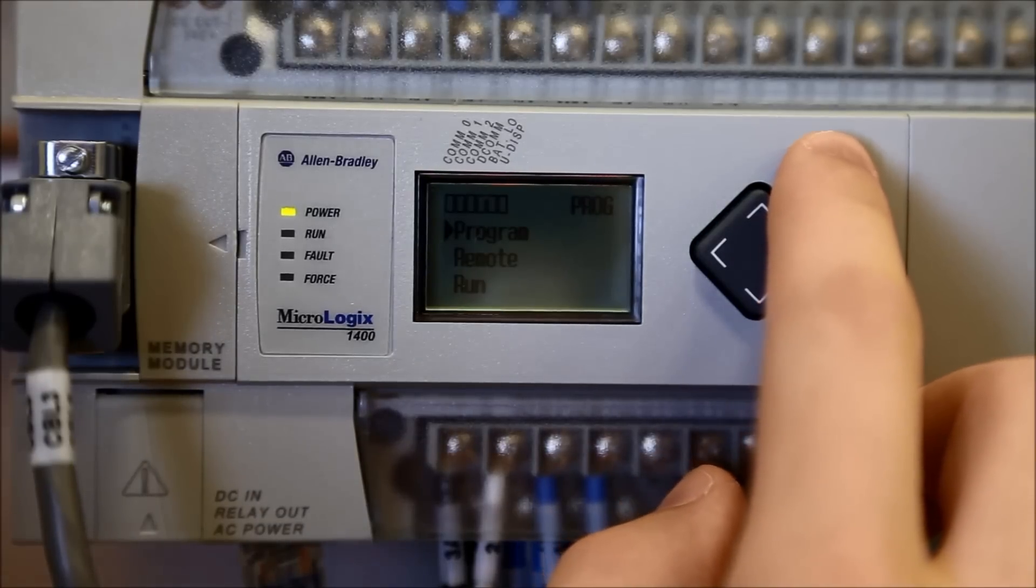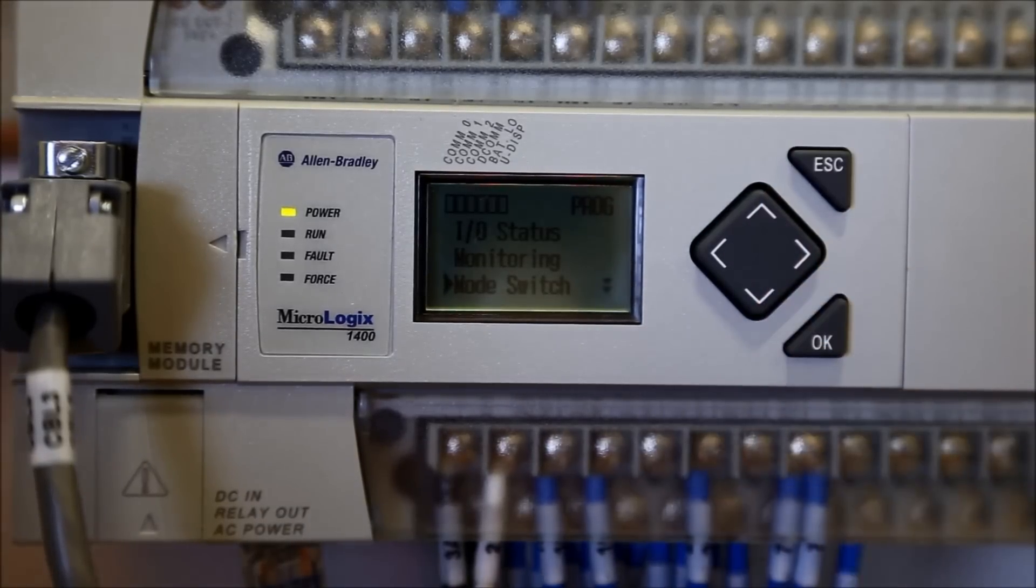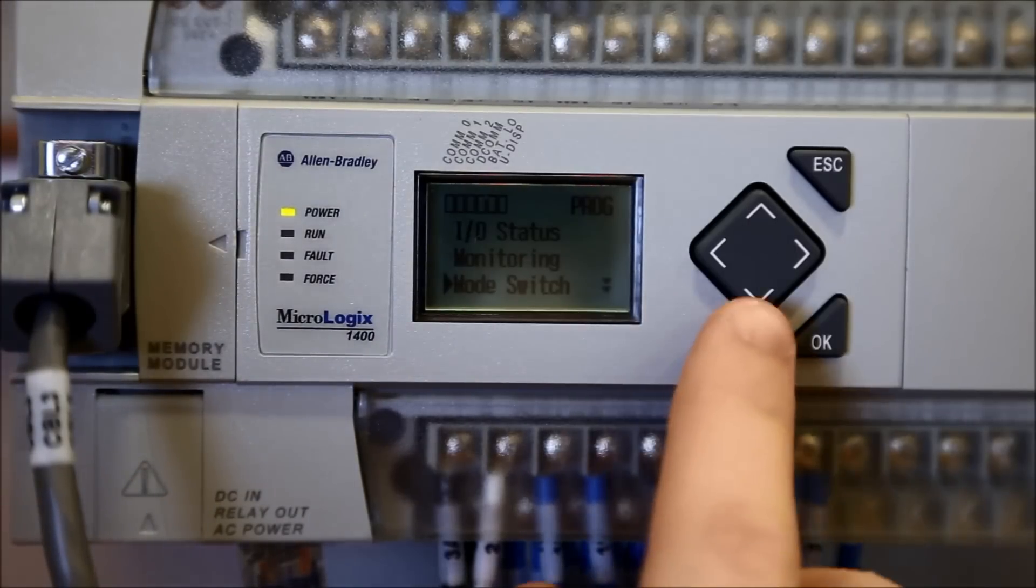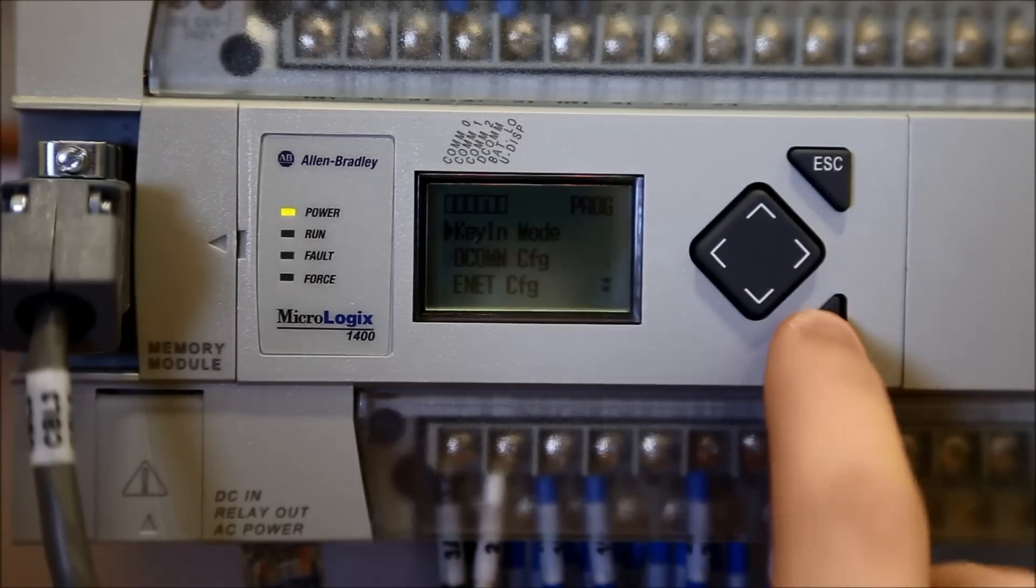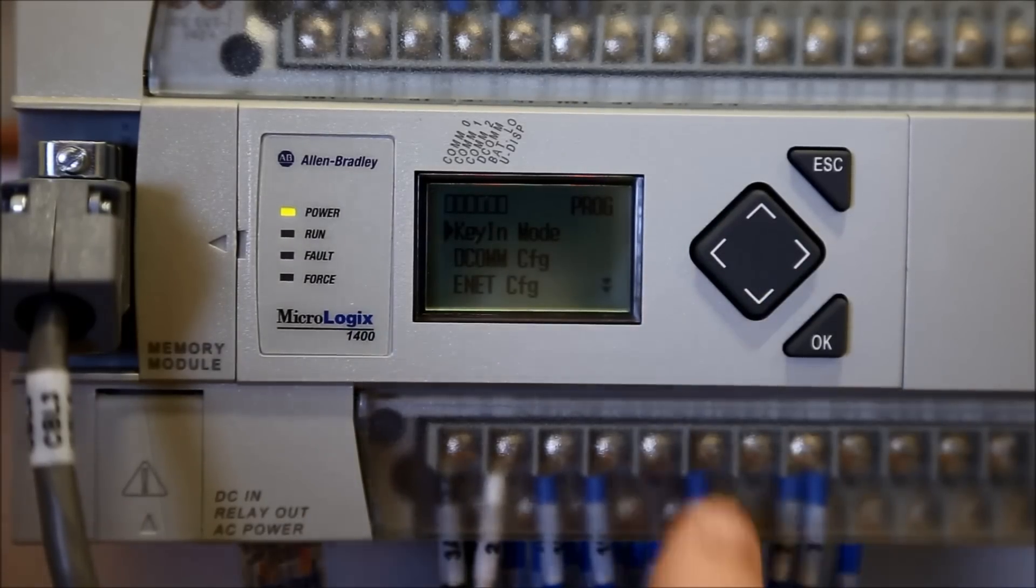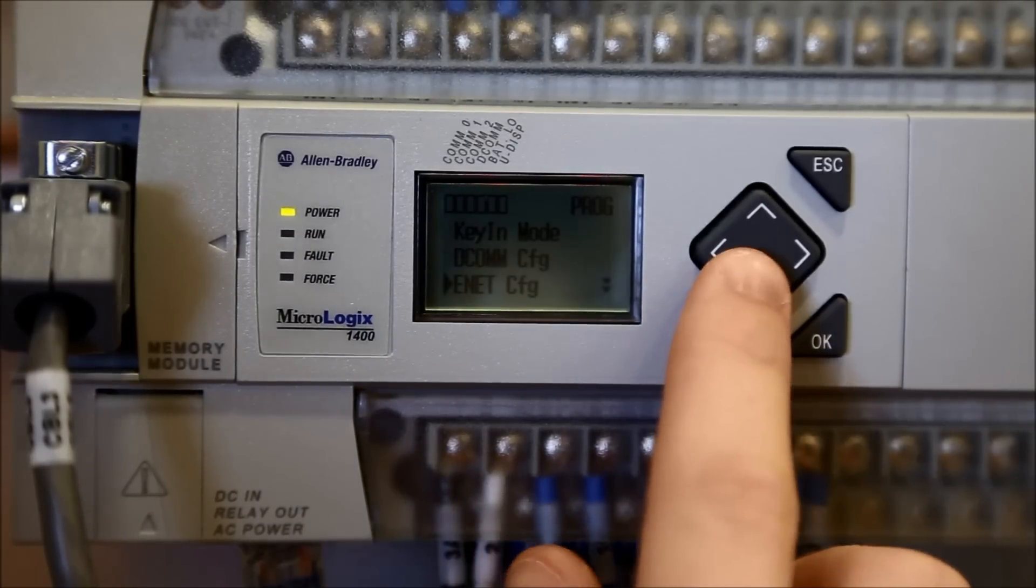Press escape to go back to the menu. Scroll down to advanced set and press OK. Use the up and down arrows to navigate to comms EEPROM and press OK.